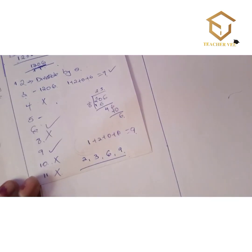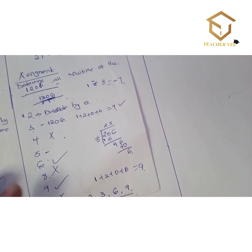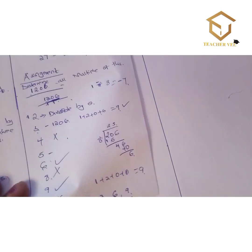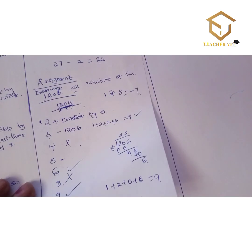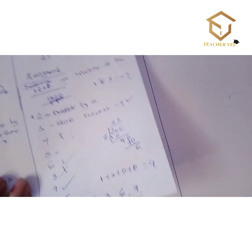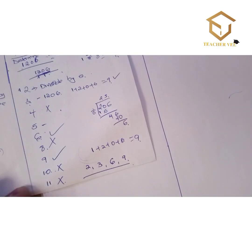So the answer to this assignment: all the multiples of 1206 are 2, 3, 6, and 9. I hope you got that answer.